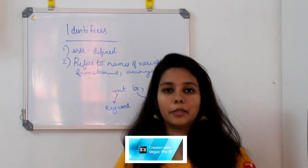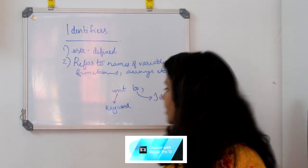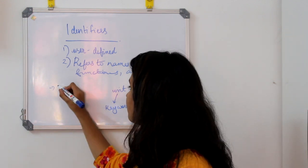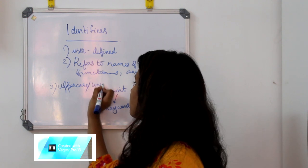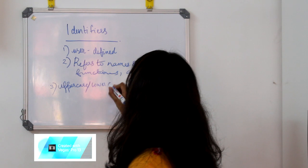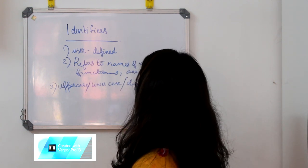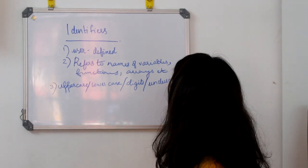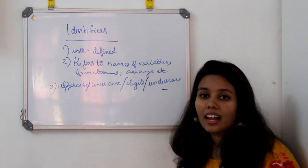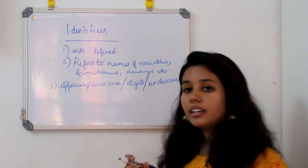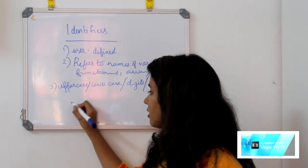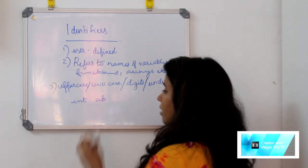Let's look at the rules. We can use capital letters (uppercase), lowercase letters, digits and numbers, and underscore. Note the difference between underscore and hyphen. These are the types of variables we use.